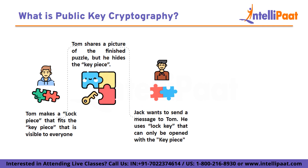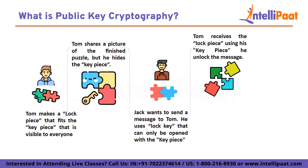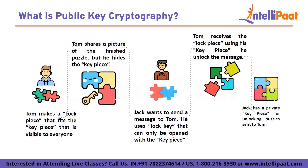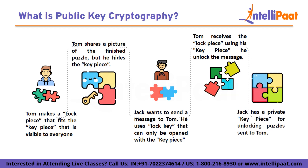When Jack wants to send a secret message to Tom, he uses the lock piece to lock the puzzle piece. The lock piece can be opened only with the key piece, which is the missing part of the public design. Tom receives the locked puzzle piece and uses his private key piece to unlock it, revealing the message Jack hid behind the puzzle. So public key cryptography is like having these puzzle pieces: your friend's lock piece is public, the key piece is private, and secret messages can be sent and received safely even if others can see the locked puzzle piece.